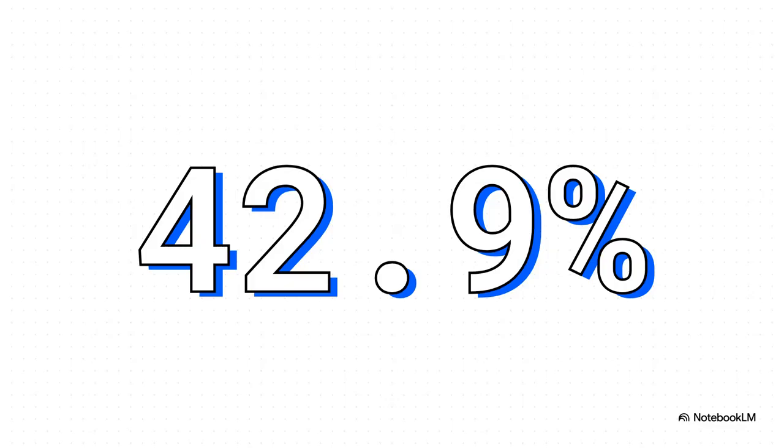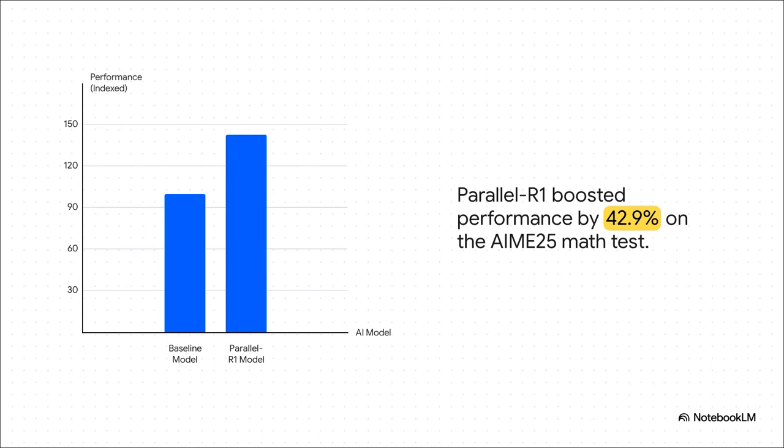On a notoriously difficult math reasoning test, the new model showed a performance boost of a whopping 42.9% over the standard model. That is not a small improvement. That is a fundamental leap. And here's what that number actually looks like. On this chart, we've set the baseline model's performance at 100. As you can see, the parallel R1 model just soars right past it. It really shows you how significant this jump in reasoning ability actually is.